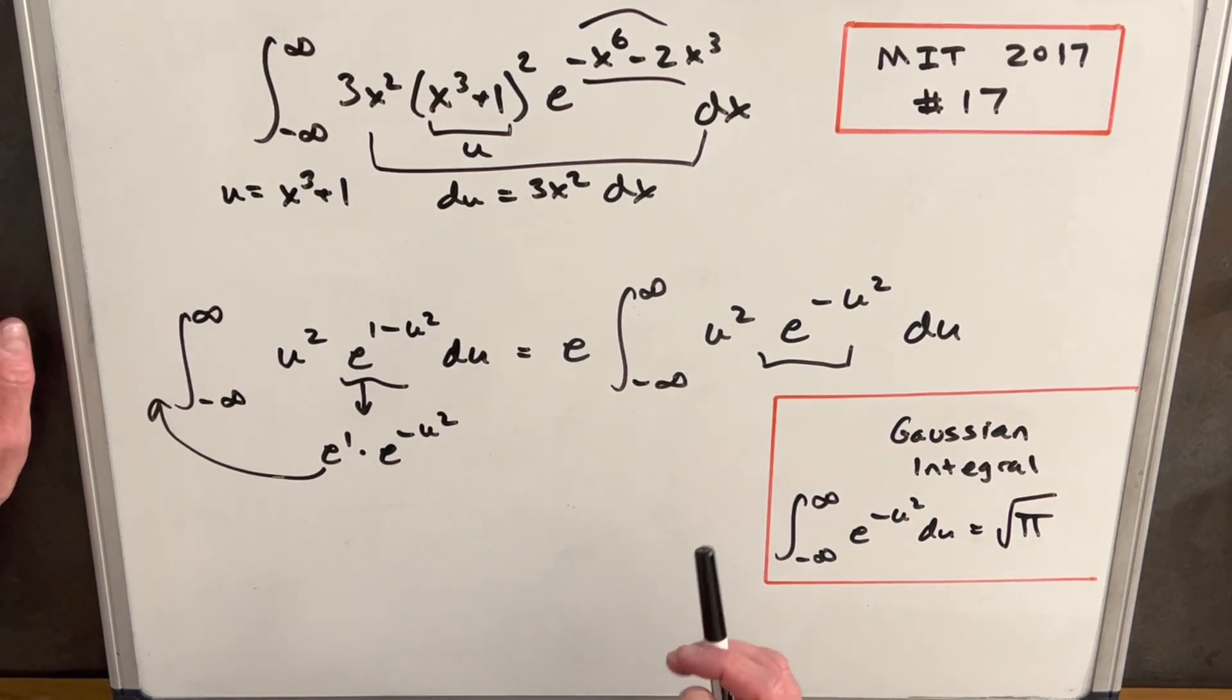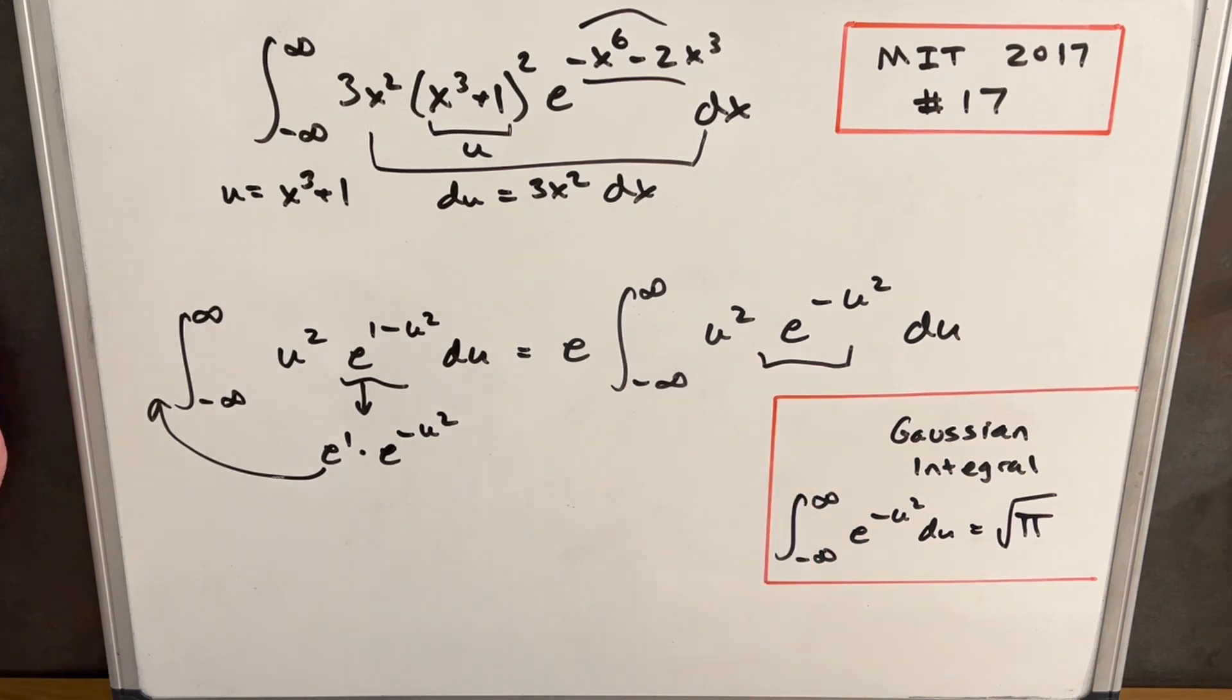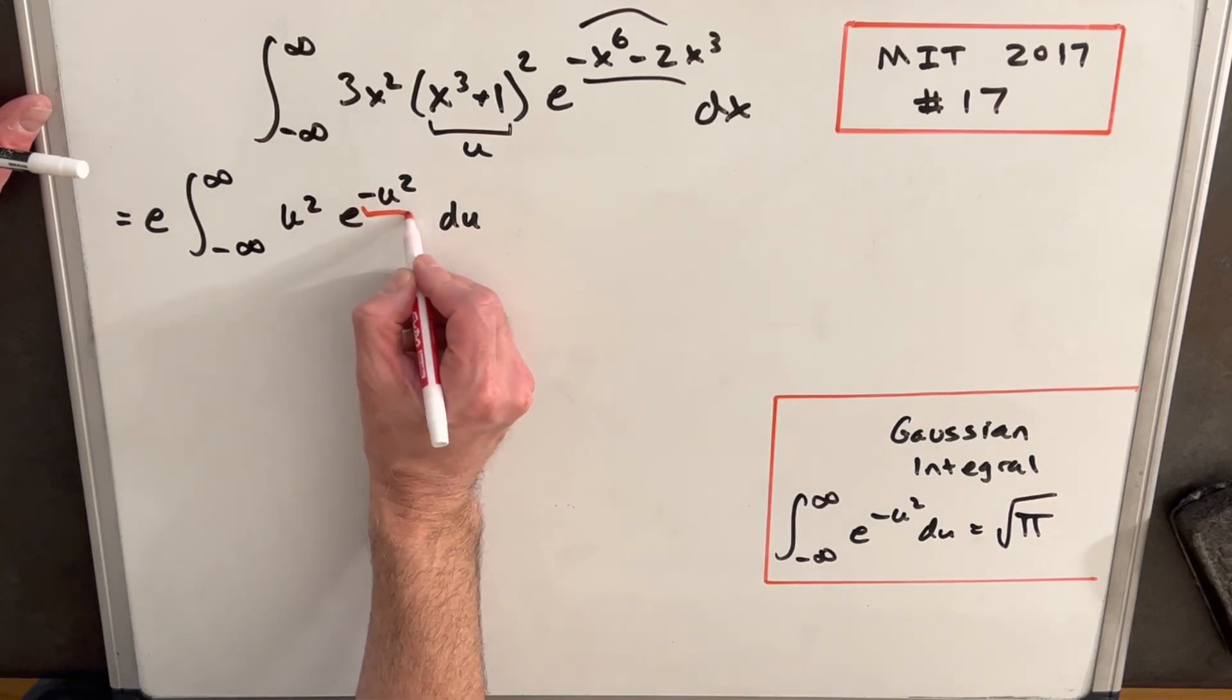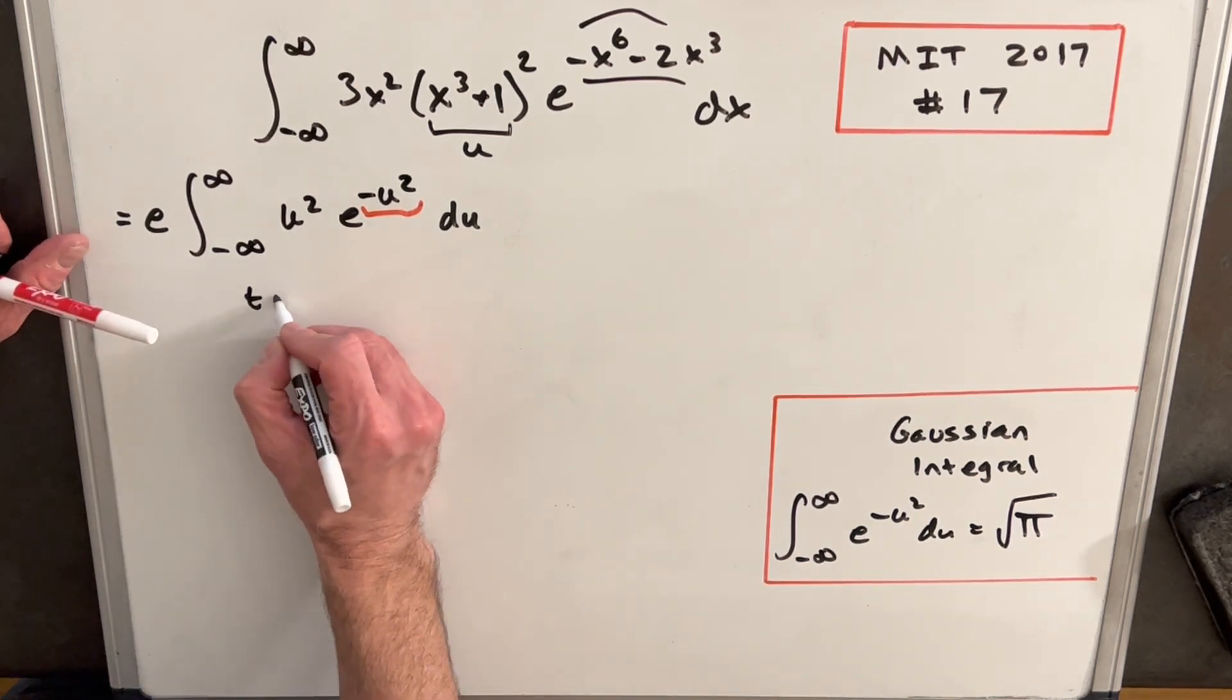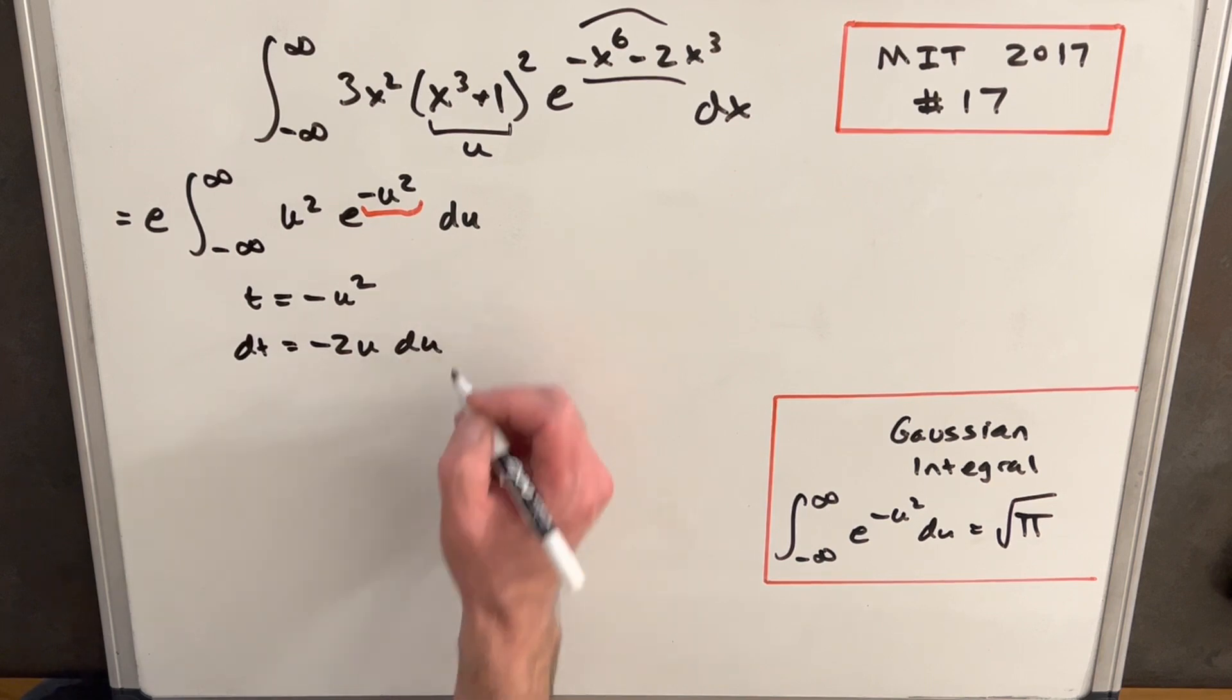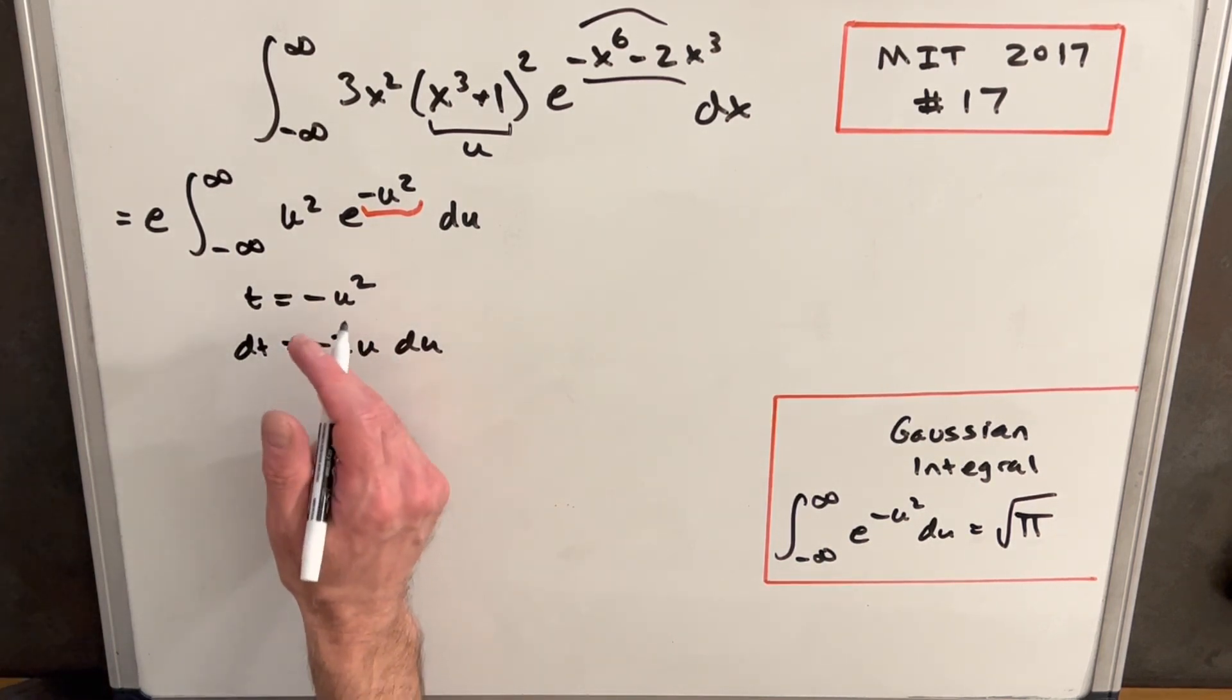So at this point, we're kind of stuck. But I think what we want to do is let's use integration by parts. That's going to allow us to manipulate this. Maybe we can get this u squared to something where we can use it. Okay, so from here, what I want to notice is if we wanted to do sort of another substitution, we can just look at this and pretend we're going to do a substitution on this. Let's just say we're going to make a substitution t equals minus u squared. So then dt is going to be minus 2u du. Now we don't have that here.